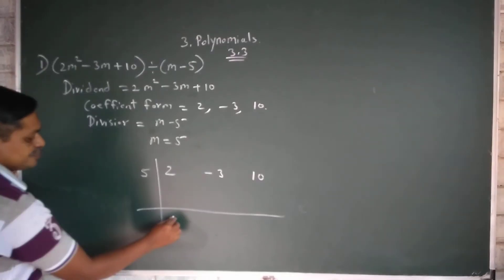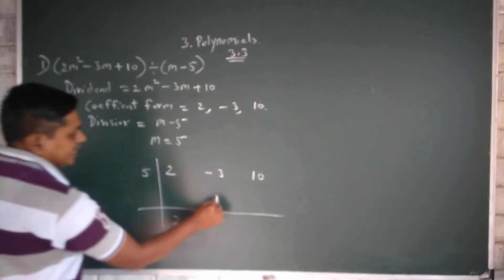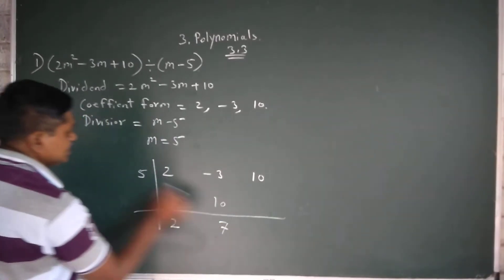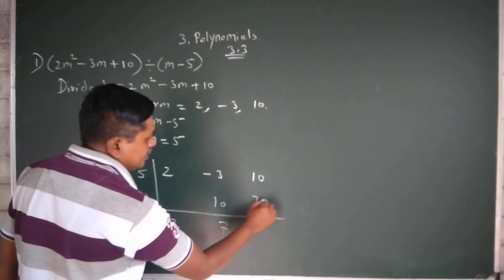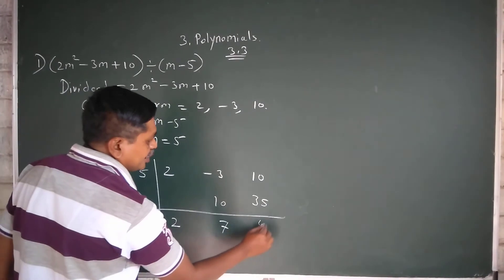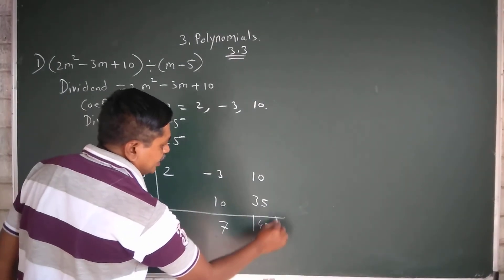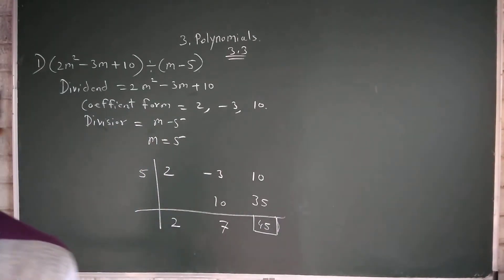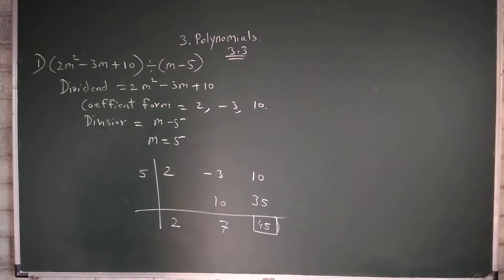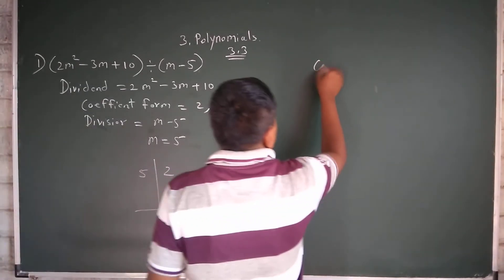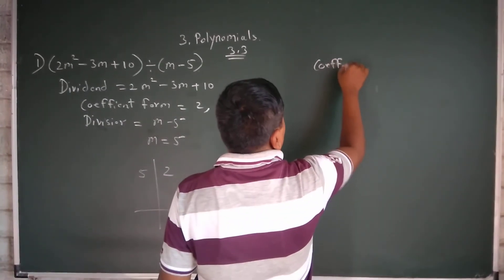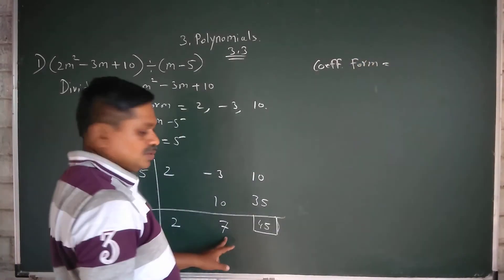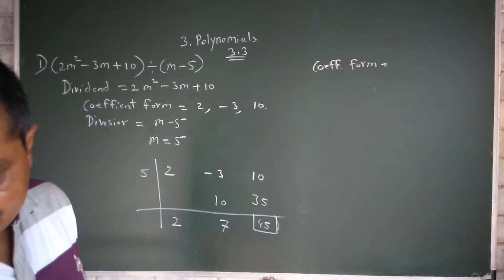5. 2 as usual came down. 2 times 5 is 10, plus minus, 10 minus 3 is 7. 7 times 5 is 35. 35 plus 10 is 45. Remainder came here: 45. And coefficient form of quotient: 2 and 7.